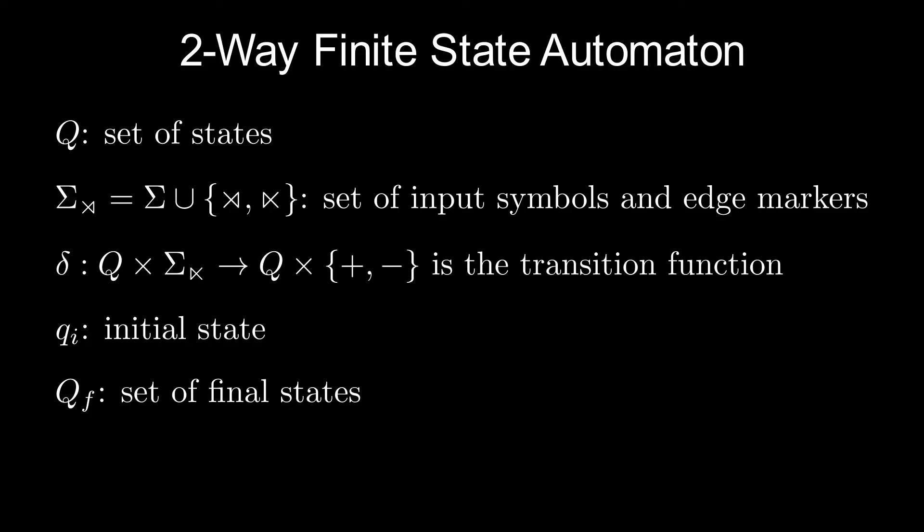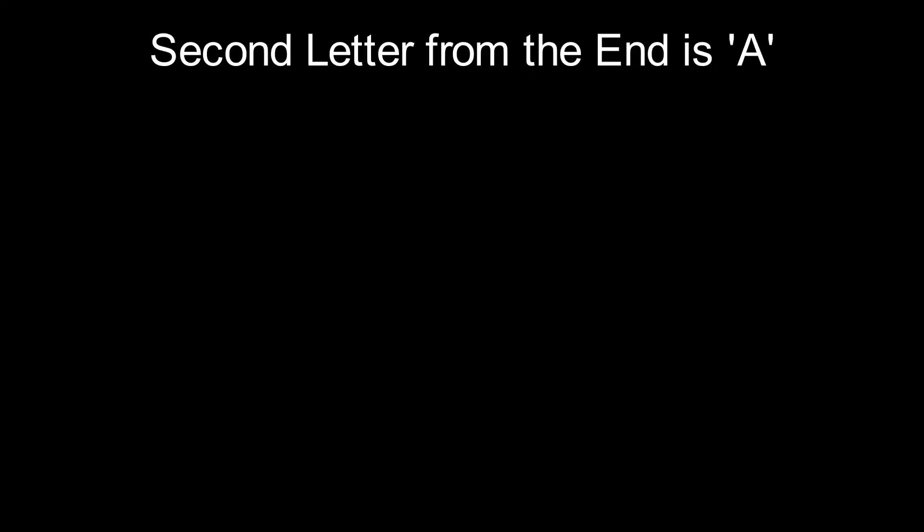Now let's say we want an automaton that accepts a string if and only if the second-to-last letter is a. We'll have a set of states q0 through q4. The symbols will be a, b, and the edge markers. q0 is the start state, and q4 is the final state.